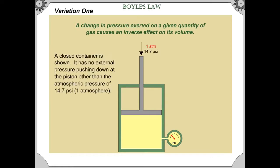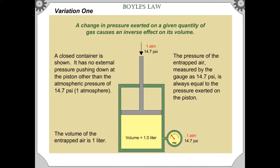A closed container is shown. It has no external pressure pushing down on the piston other than the atmospheric pressure of 14.7 psi, or 1 atmosphere. The volume of the entrapped air is 1 liter. The pressure of the entrapped air, measured by the gauge as 14.7 psi, is always equal to the pressure exerted on the piston.